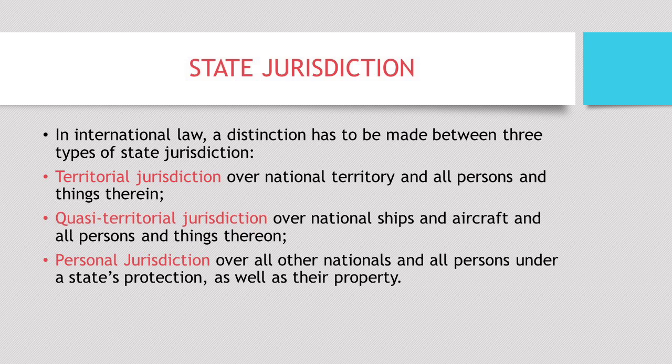To study aircraft and civil aviation rules further, we need to understand state jurisdiction, which is of three kinds. First is territorial jurisdiction, which deals with the national territory and the persons within the territory. The second is quasi-territorial jurisdiction over national ships and aircraft and all persons and things thereon — aircraft law comes within quasi-territorial jurisdiction. The third is personal jurisdiction, wherein all nationals and persons under the state's protection as well as property come under personal jurisdiction.